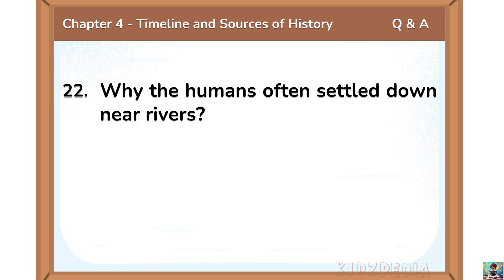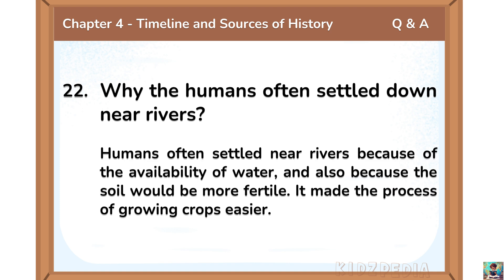Why did humans often settle down near rivers? Humans often settled near rivers because of the availability of water and also because the soil would be more fertile. It made the process of growing crops easier.